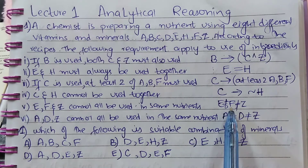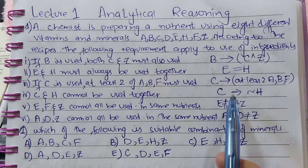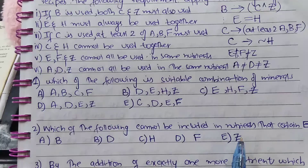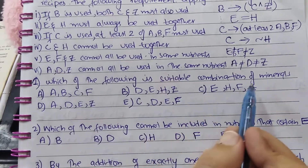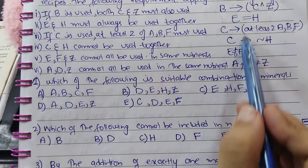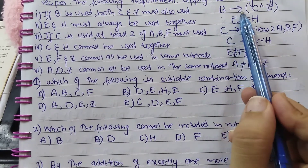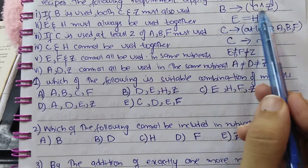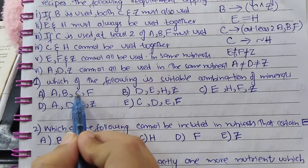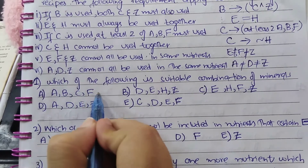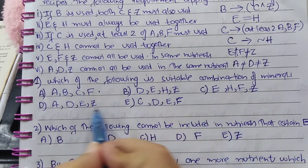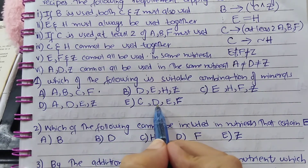These are the shortcut representations we will use when solving analytical reasoning questions. Question one: which of the following is a suitable combination of minerals? We check the first statement — if B is used, C and Z must be used. In one option, B is used and C is used but Z is not, so we place a dot there and move on. In another option, there is no B.